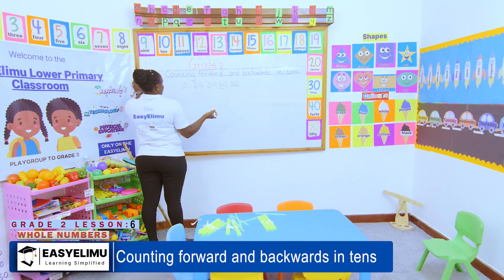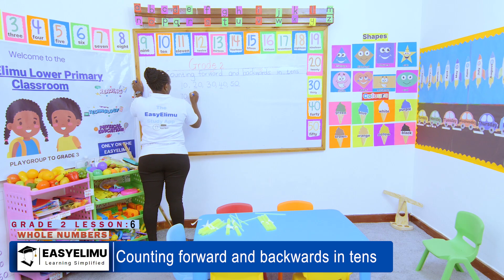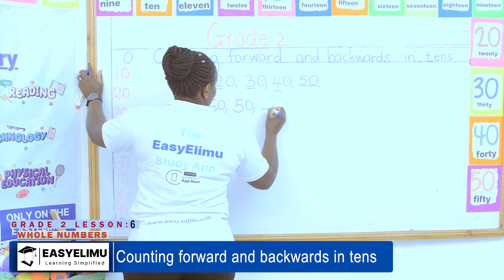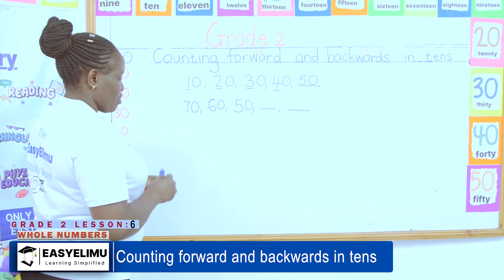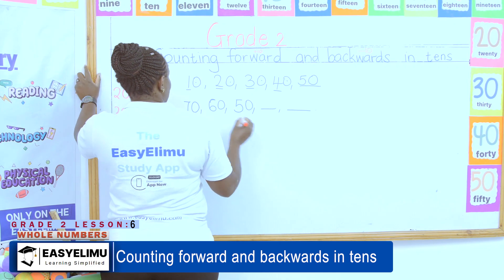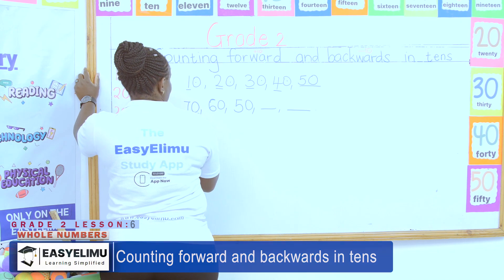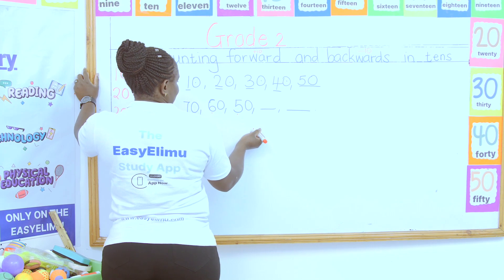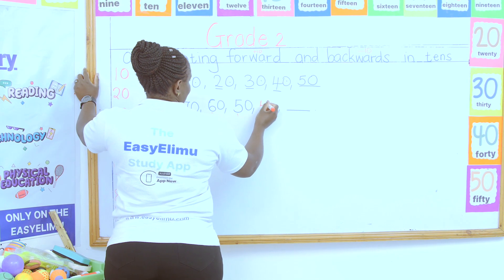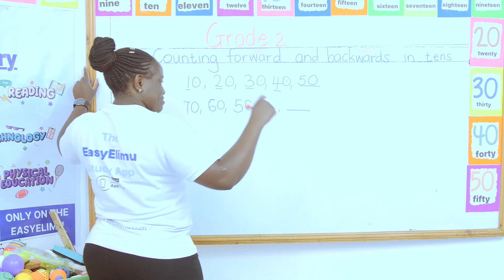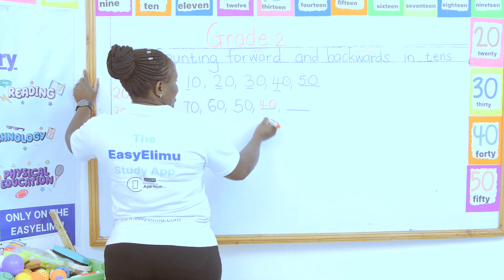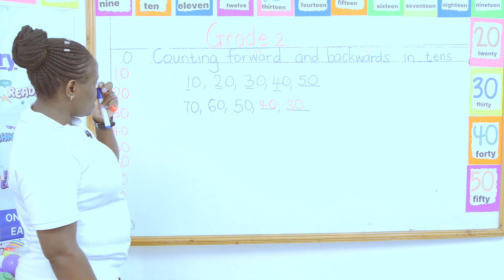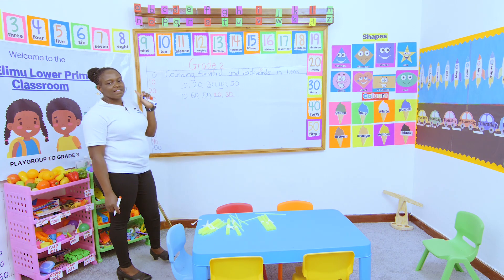Now I'm told: 70, 60, 50 — find the missing numbers. Look at your numbers. Are they increasing or reducing? We are saying this is reducing. Seven minus one gives six, six minus one gives five, five minus one gives four. Tens must have a zero, so that's 40. Then four minus one gives three, so 30. The missing numbers are 40 and 30.